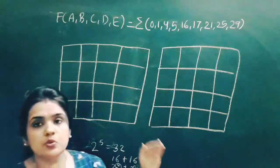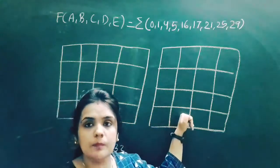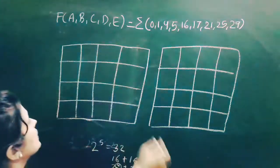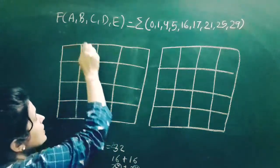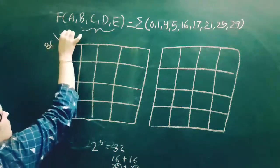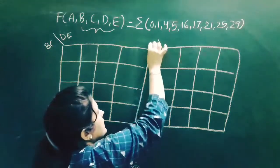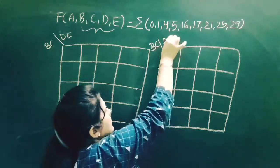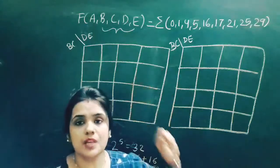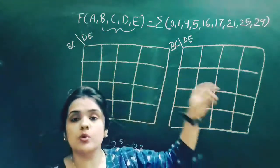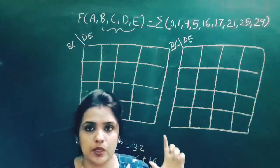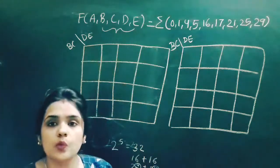These are two 4-variable K-maps. How can we represent 5 variables in these two K-maps? We take b, c, d, e — out of these 5 variables, I am taking b, c, d, and e and writing b, c, d, e on each K-map. So I can represent b, c, d, e in these 4-variable K-maps because b, c, d, e are a total of 4 variables.